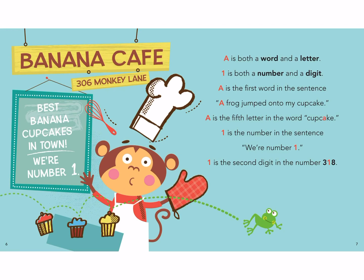A is both a word and a letter. One is both a number and a digit. A is the first word in the sentence — a frog jumped onto my cupcake. A is the fifth letter in the word cupcake. One is the number in the sentence — we are number one. One is the second digit in the number 318.